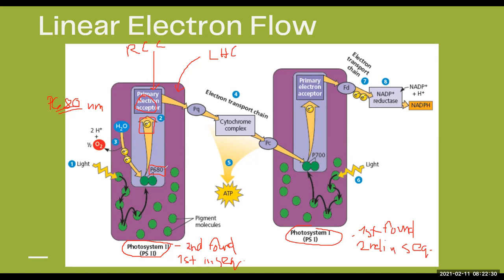Once P680 donates its electron to the primary electron acceptor, P680 loses its electron and becomes extremely unstable — it needs an electron. So what happens is that water absorbed by the plant is split here at Photosystem 2 — a process described as photolysis. The water is lysed into its oxygen part and its hydrogen part or hydrogen ions. The electrons from the hydrogen ions are used by P680 to stabilize itself again.